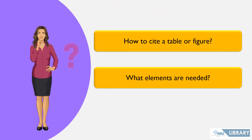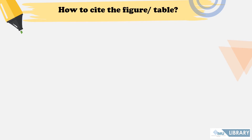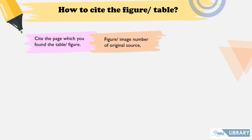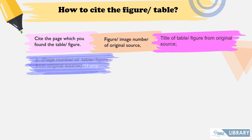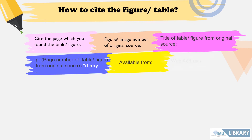To cite a figure or table, first cite the pages on which you found the table or figure, followed by a full stop. Then write the figure number, a comma, followed by the title of the figure, then a semi-colon. Next, write the page number if available. Then write the words 'available from:' followed by a colon, and end the citation with the web address.